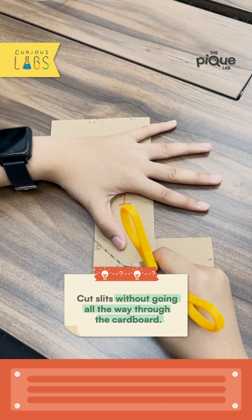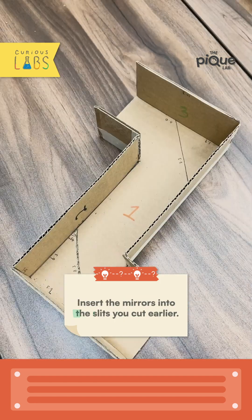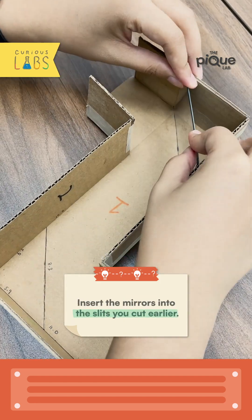Cut slits without going all the way through the cardboard. Tape or glue them all together. Insert the mirrors into the slits you cut earlier.